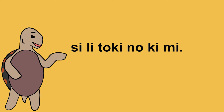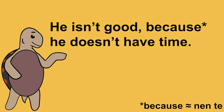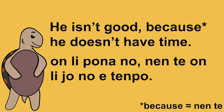So what would 'si li toki no kimi' mean? It means 'you do not talk to me.' Now try to translate this complex English sentence into Toki Ma: 'He isn't good because he doesn't have time.' The correct translation is 'on li po na no, nen te on li yo no e tempo.' This is a sneak peek of the word 'te', which we will examine in further detail later.